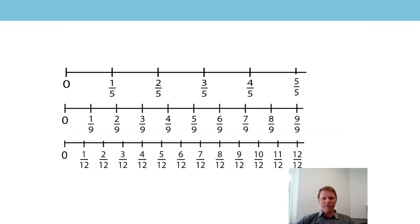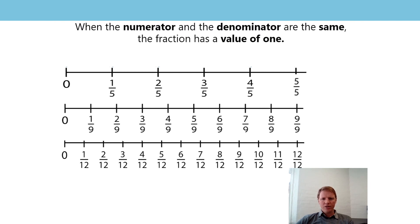This is a familiar image. I want us to make sure we know that at the end of these number lines I've written 5 fifths, 9 ninths, and 12 twelfths. The generalisation one more time: when the numerator and the denominator are the same, the fraction has a value of 1. So 5 fifths - I can write 1 instead; 9 ninths - I can write 1 instead; and 12 twelfths - I can also write 1.